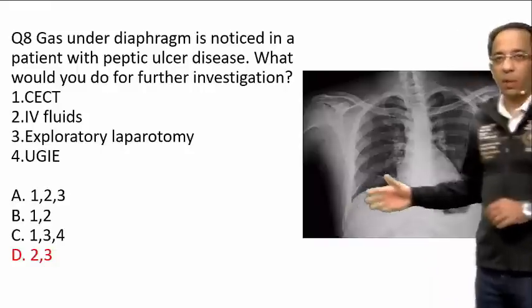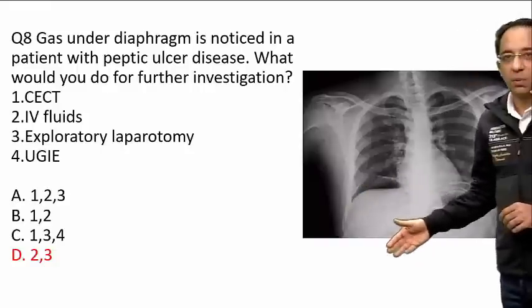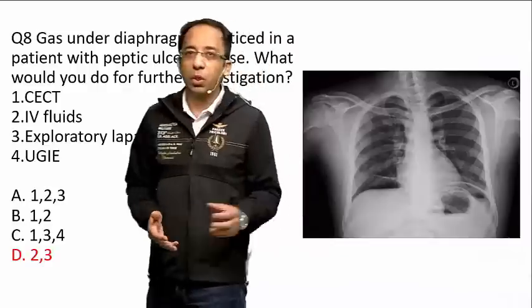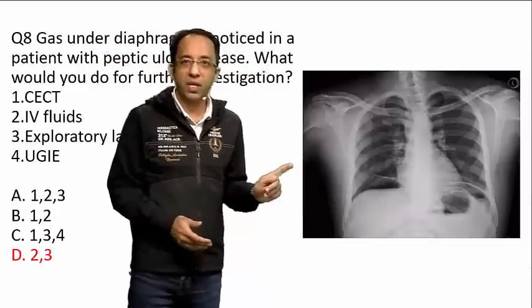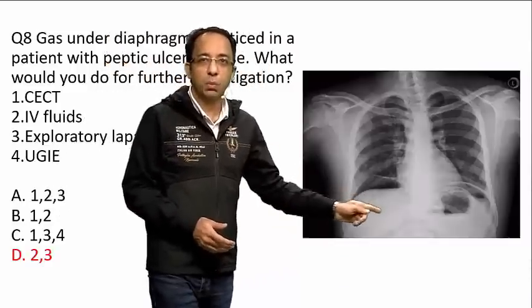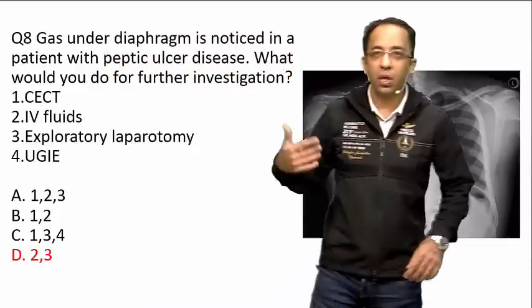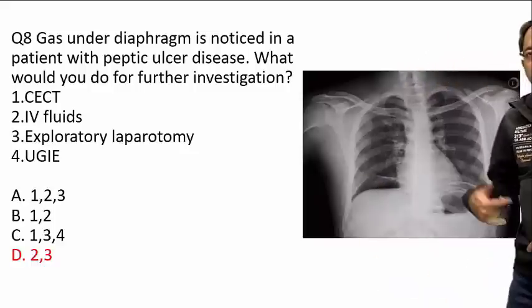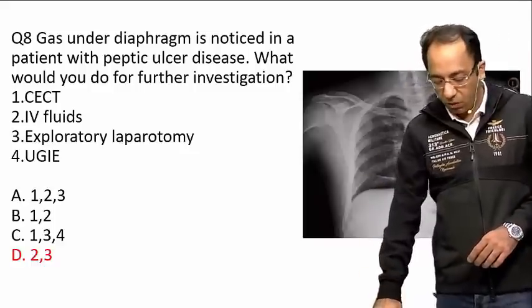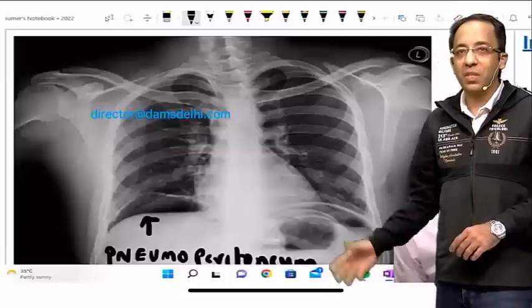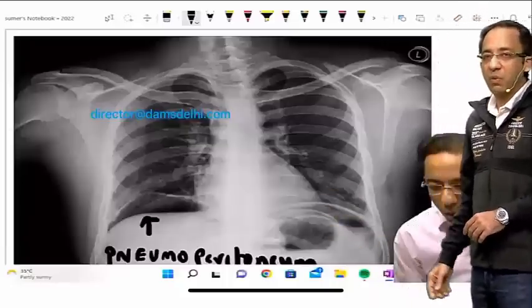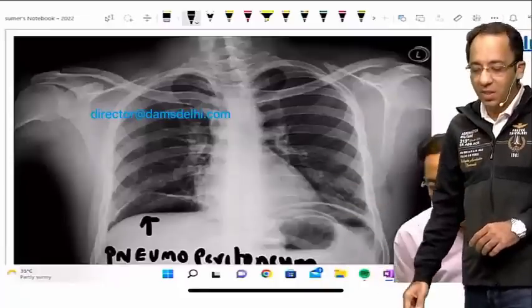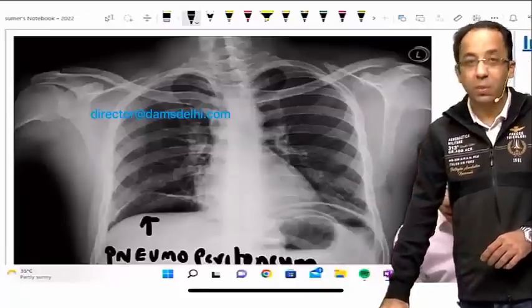This was probably a direct repeat question — they showed gas below the diaphragm. This is pneumoperitoneum and you think of bowel perforation. You have to give IV fluids and do an exploratory laparotomy. The answer was options two and three. We discussed gas below the diaphragm at length in class — it has been asked in INICT yet again.